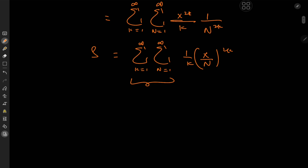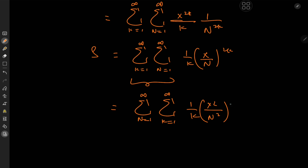Now I'd like to switch the order of the summation operators and write this as the sum over n from 1 to infinity, then the sum over k from 1 to infinity, of (1/k) times (x squared over n squared) to the k — that works out much better.